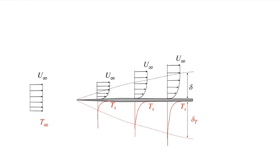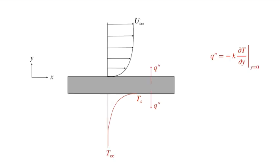Similarly, we have a thermal boundary layer where the temperature varies from T surface out to T infinity over a distance delta T, the thickness of the thermal boundary layer. If we know the temperature distribution and the velocity profile at the surface where the velocity is zero, Fourier's law gives us purely conductive heat transfer.